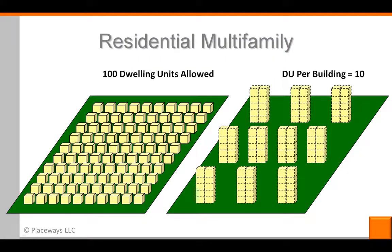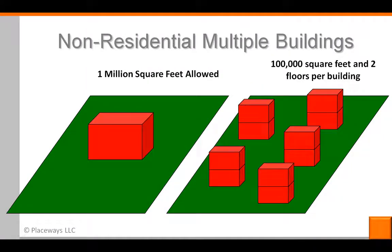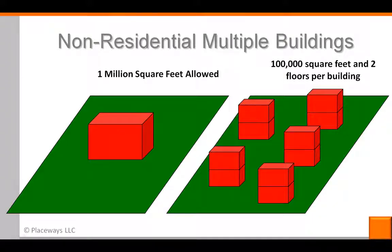For my residential uses, I can set up buildings with multifamily — more than one dwelling unit per building — by entering quantities in the DU per building column. So, if a property could have a total of 100 dwelling units, entering 10 DU per building would result in 10 buildings. For my non-residential and mixed-use buildings, I can establish multiple structures by entering footprint sizes and floor heights. So, if I have a potential for 1 million square feet in a given property, entering 100,000 square feet and 2 floors would result in 5 buildings on that property.